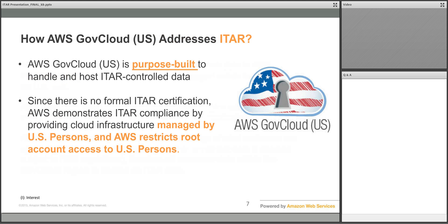AWS GovCloud is purpose-built to host ITAR-controlled data. It's worth noting that there is no formal ITAR certification. However, AWS demonstrates ITAR compliance by providing cloud infrastructure that's managed by vetted US citizens and operated on US soil with restricted root account access to US persons only.